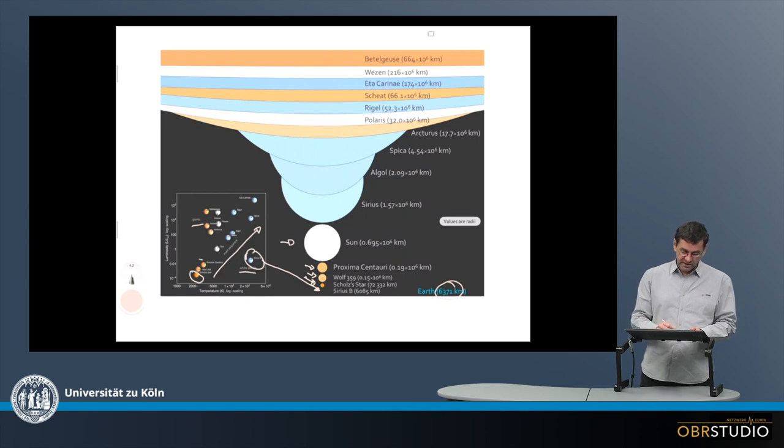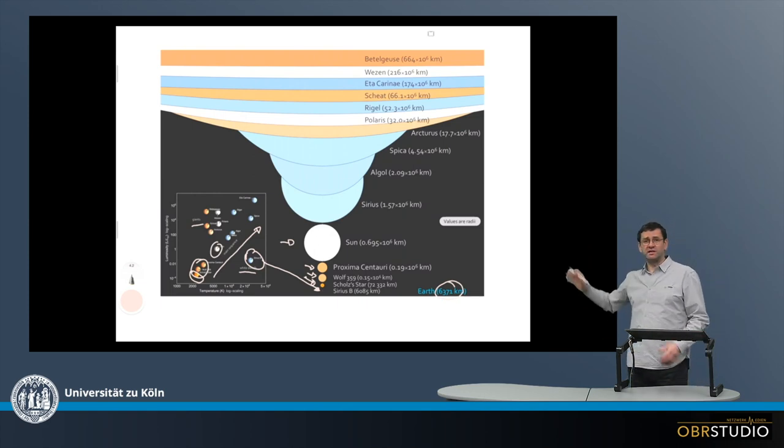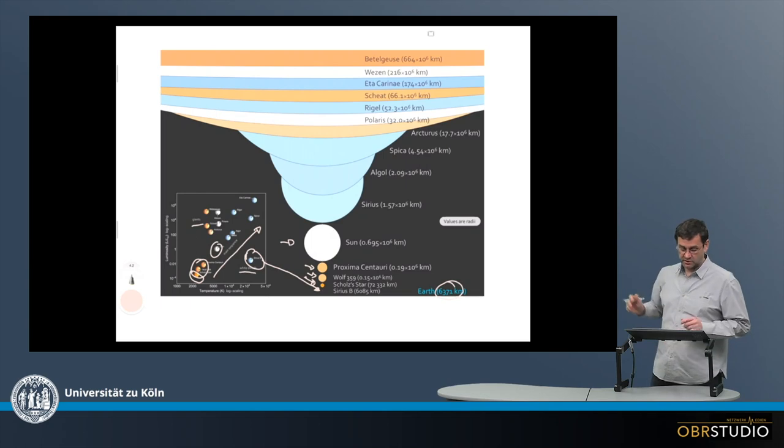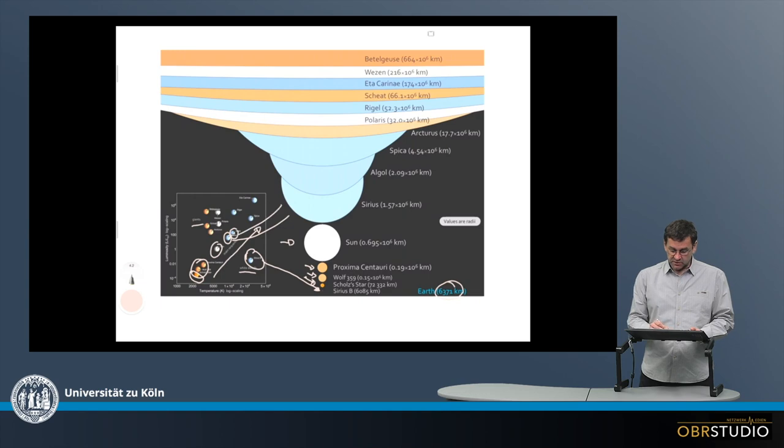These three stars are all here at the beginning of the sequence, and then here is the Sun. The Sun actually is really quite a small star if we look at all the others. Then there is Sirius, something like here, and Algol. They really follow the HRD diagram a little bit, but not completely.